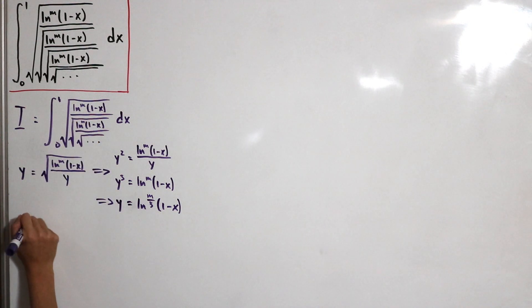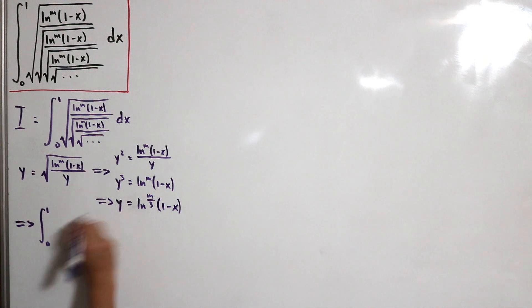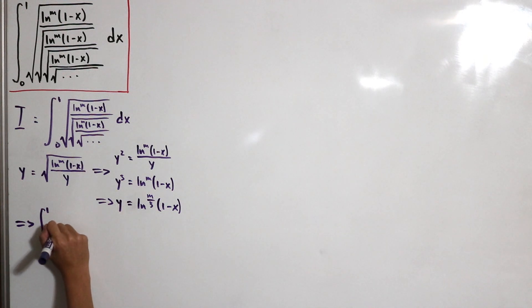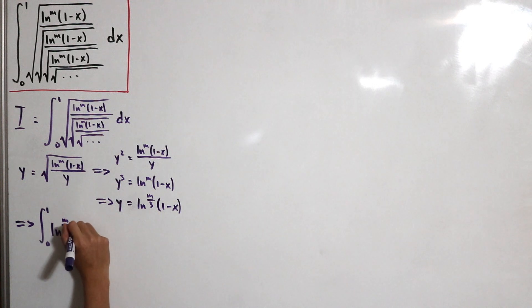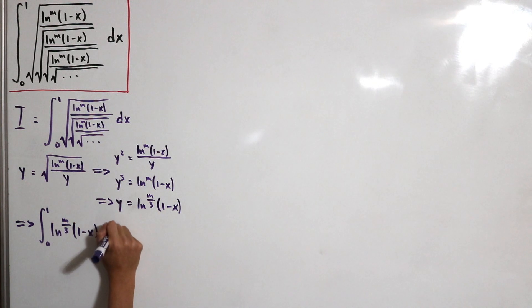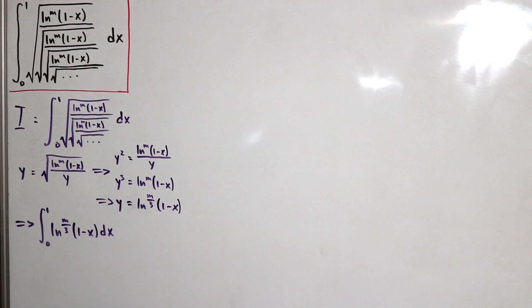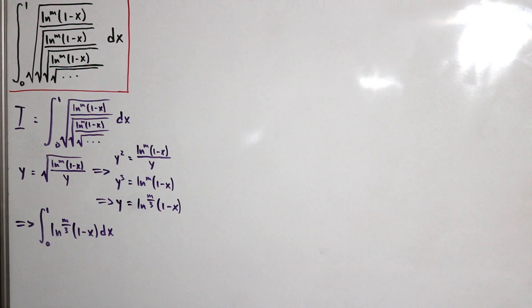Now we have the integral from 0 to 1 of ln^(m/3)(1 minus x) dx. From here, to integrate this, we'll perform a u-substitution.